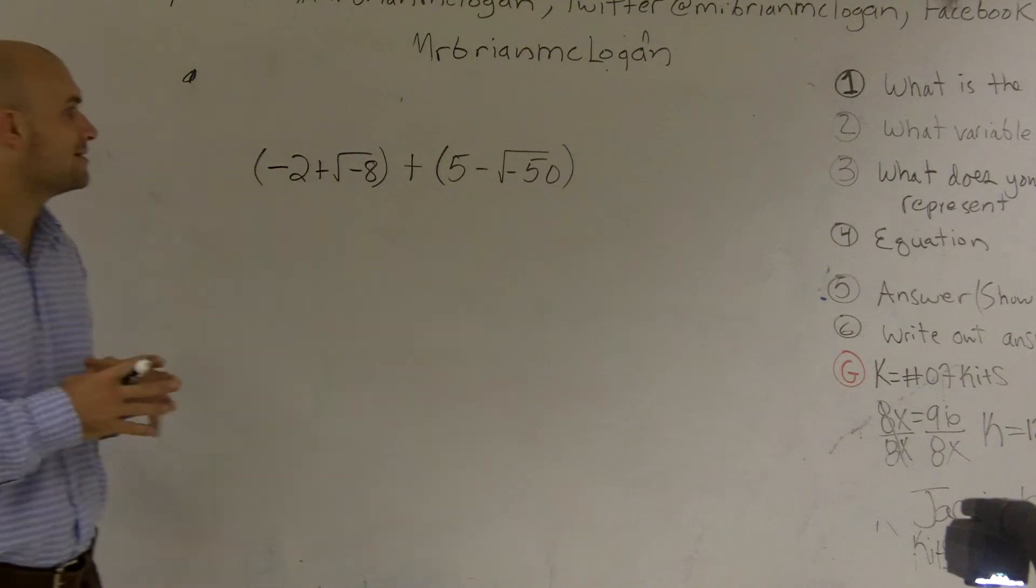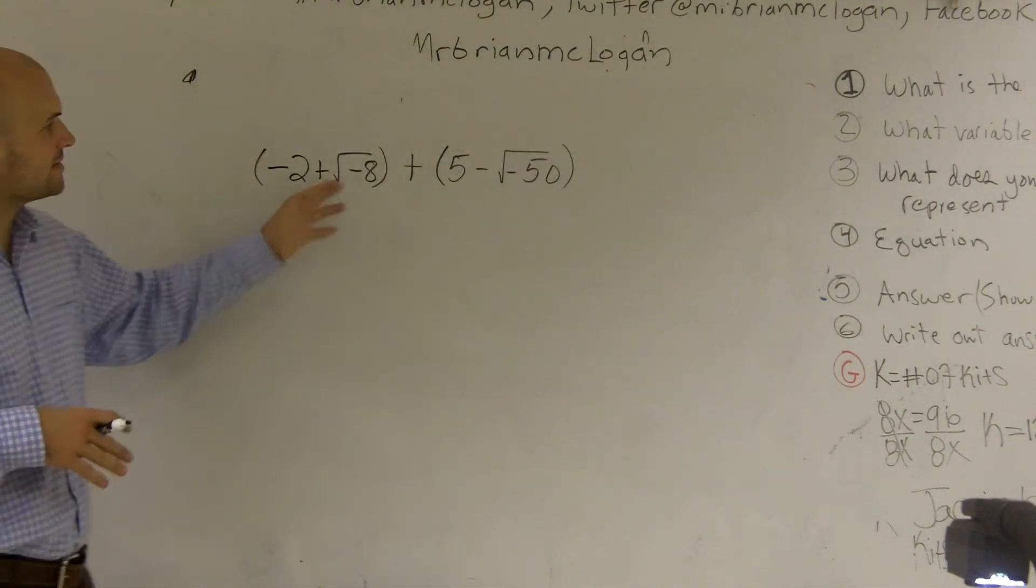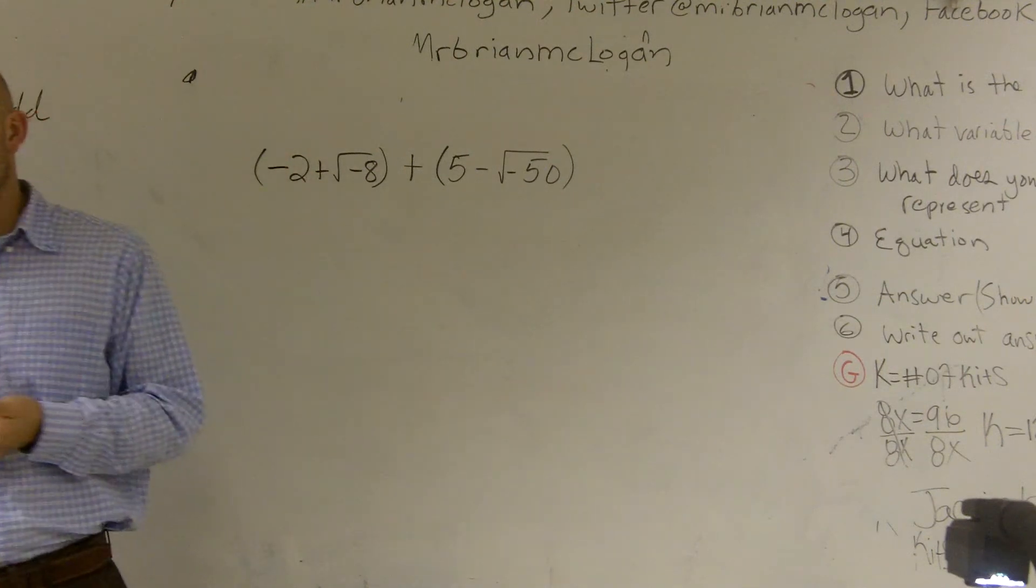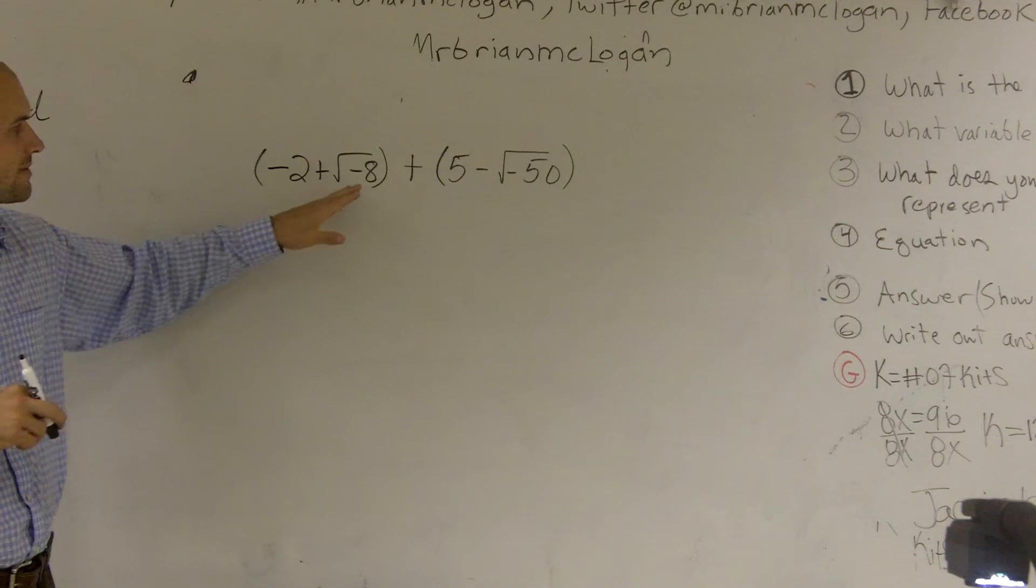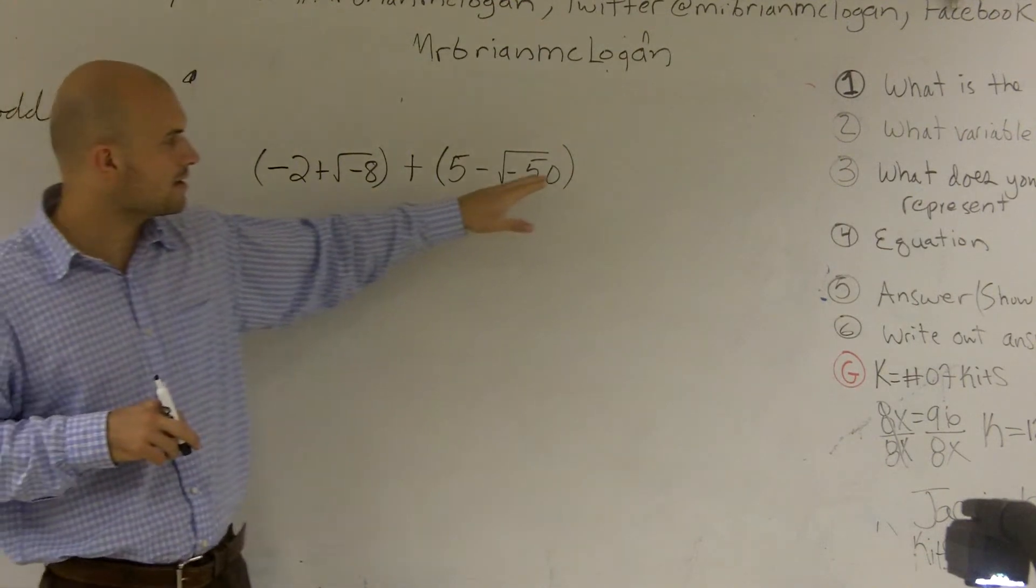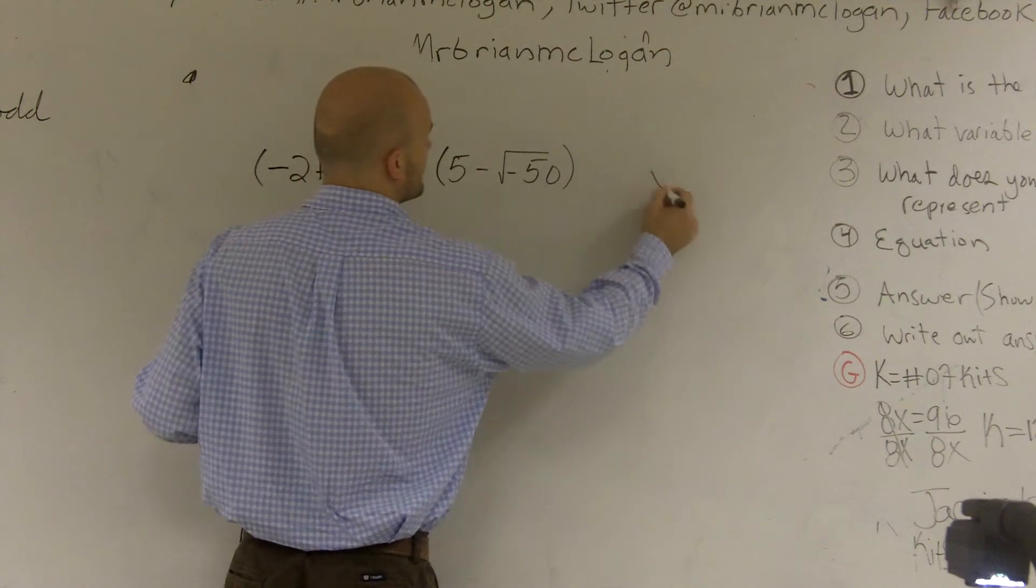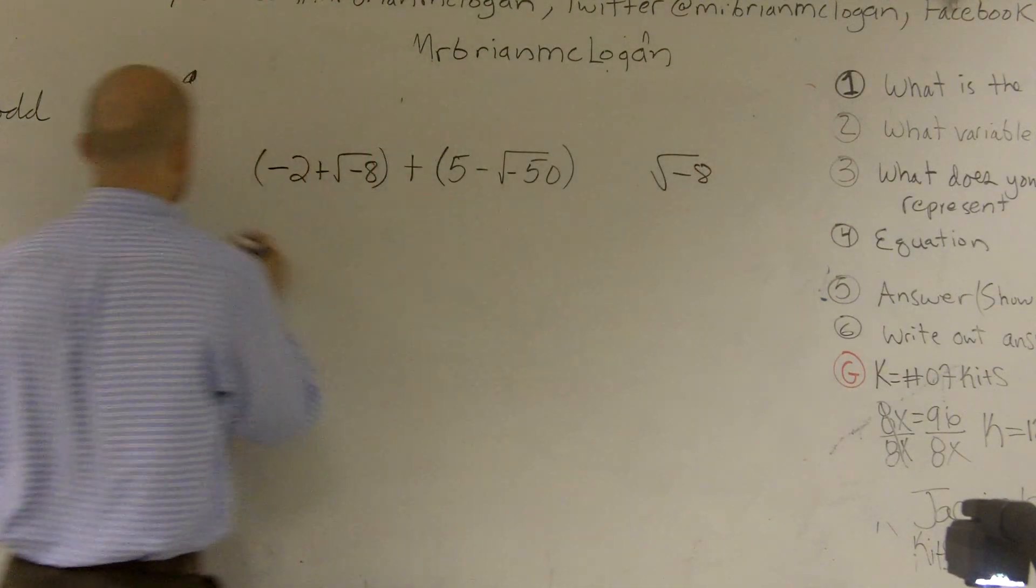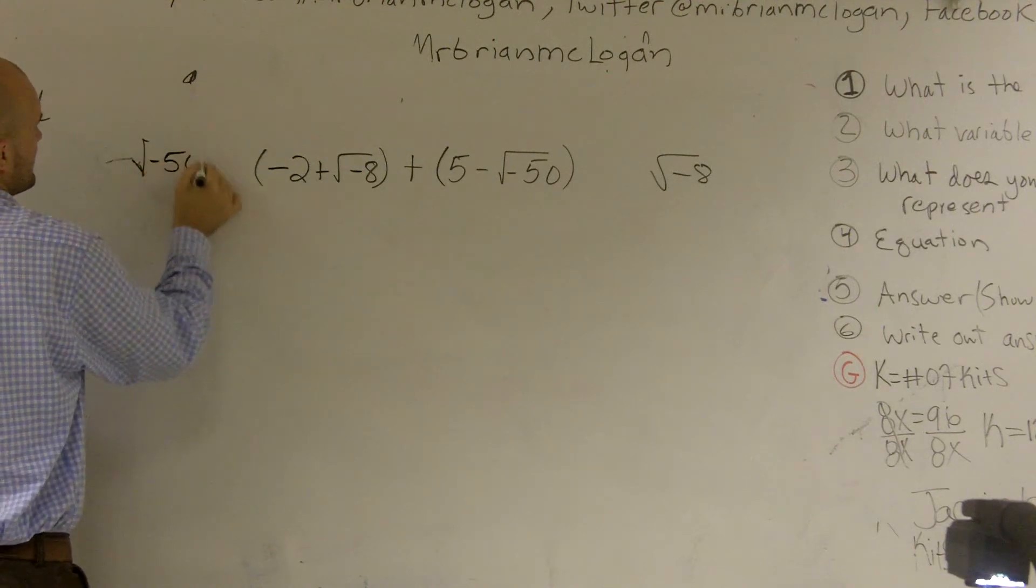What I want to show you is how to add and subtract complex numbers. The first thing we look at this and we see that we have a square root of negative 8. You can't take the square root of a negative number, so we're going to have to simplify these radicals. I'm just going to do these on the side. Let's set the square root of negative 8 and square root of negative 50.